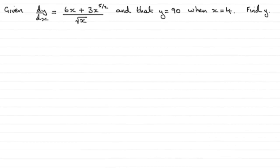Now for this part of the question, which is worth 5 marks, we're given that dy by dx equals 6x plus 3x to the power 5 over 2, all divided by the square root of x. And that y equals 90 when x is 4. And what we've got to do basically is find y in terms of x and simplify the coefficient of each term.